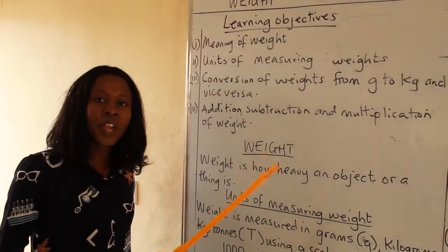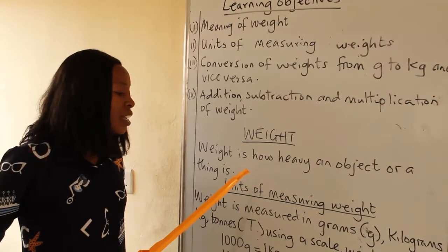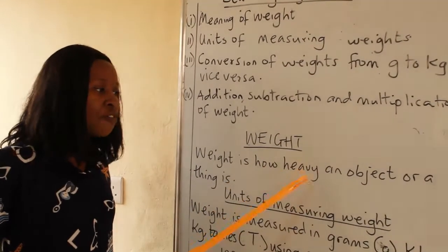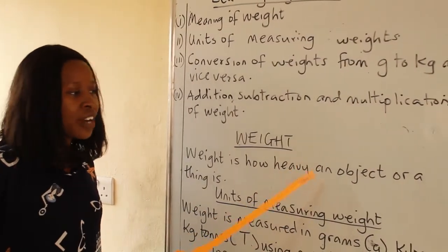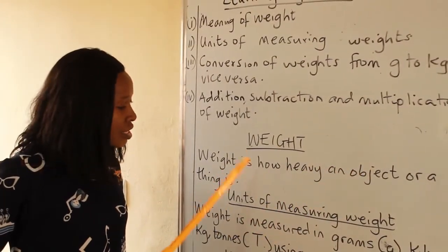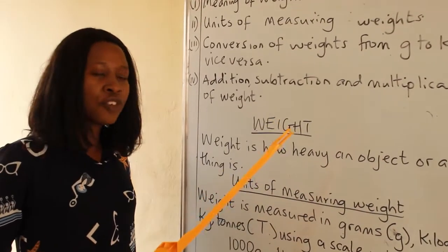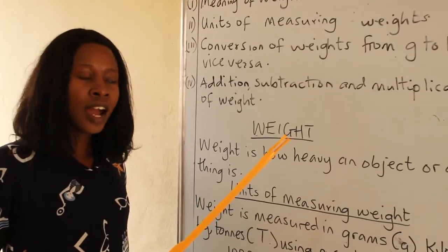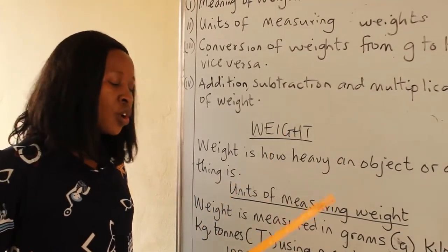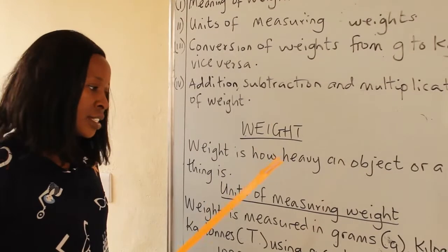What is weight? Weight is how heavy an object or a thing is.